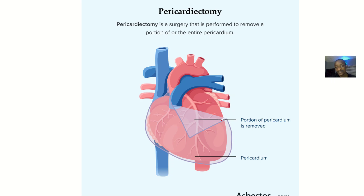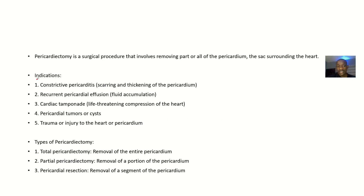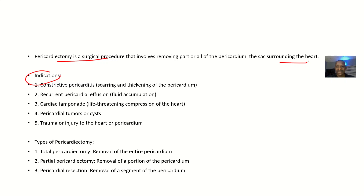For the definition: the pericardium is the covering of the heart, so the surgery to remove the pericardium is pericardiectomy. Formally, pericardiectomy is a surgical procedure that involves removing parts or all of the pericardium, which is the sac surrounding the heart.